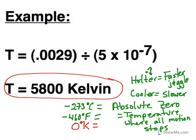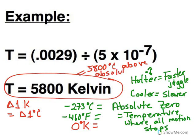So zero Kelvin is absolute zero. The size of a change in temperature, a change of 1 degree Kelvin delta, the little triangle means change, is equal to 1 degree Celsius change. So 5800 Kelvin is 5800 degrees Celsius above absolute zero.